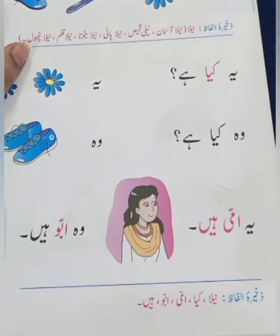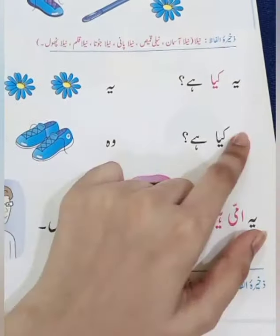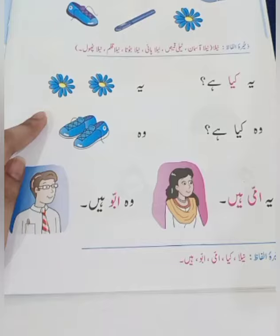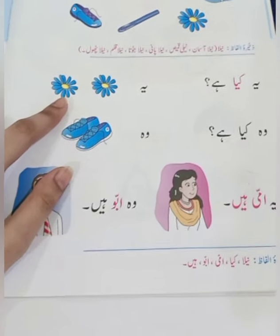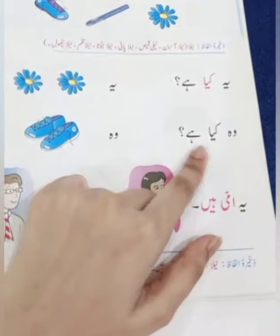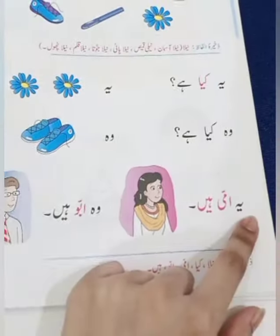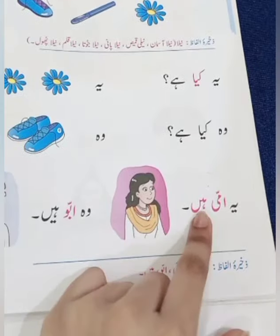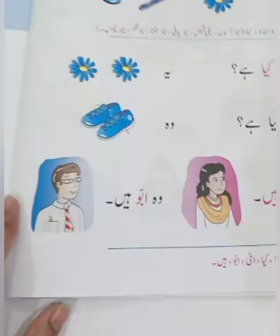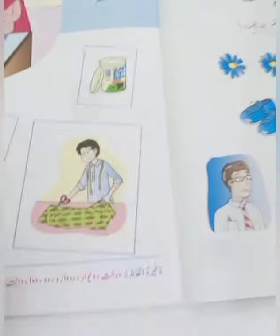نیلا، نون یہ لام الف نیلا۔ یہ کیا ہے؟ یہ پھول ہے۔ وہ کیا ہے؟ وہ جوتے ہیں۔ یہ امی ہے، وہ ابو ہے۔ اب نکالیے صفحہ نمبر تیرہ: دال۔ دال سے دہی، دال سے درزی، دال سے دلیا، دال سے درخت۔ (Blue sentences practice: this is a flower, shoes, mother, father. Page 13 - Dal: yogurt, tailor, porridge, tree.)